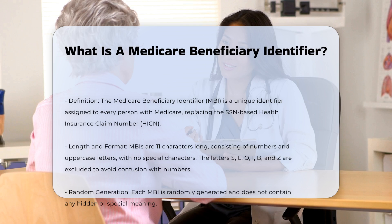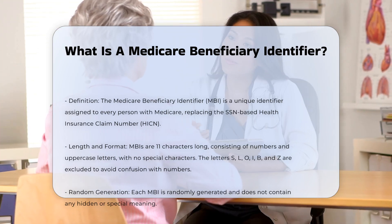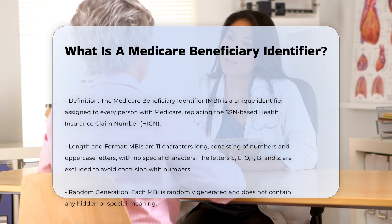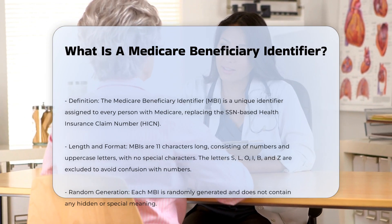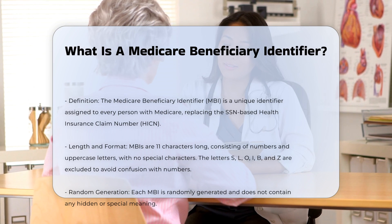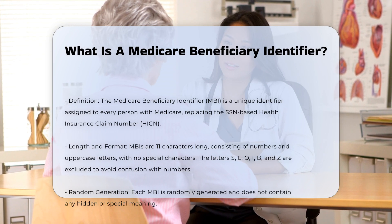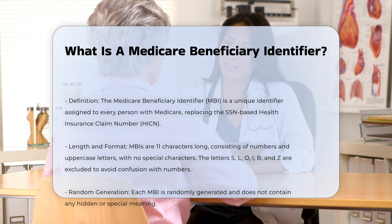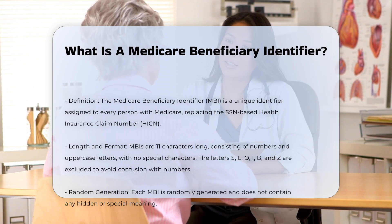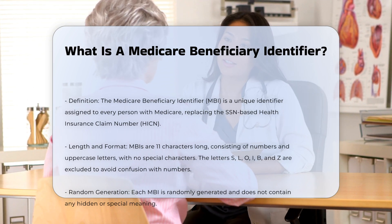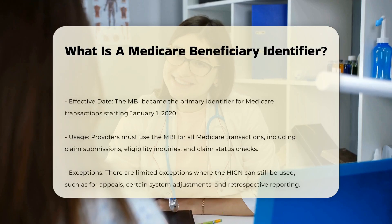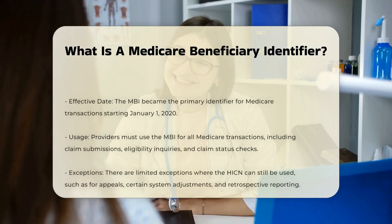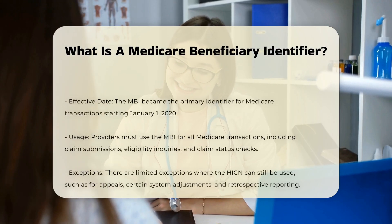Key characteristics of MBIs — Length and Format: MBIs are 11 characters long, consisting of numbers and uppercase letters with no special characters. The letters S, L, O, I, B, and Z are excluded to avoid confusion with numbers.